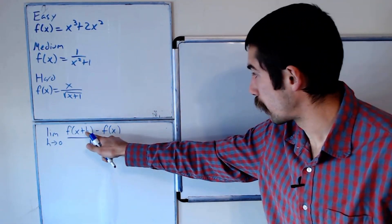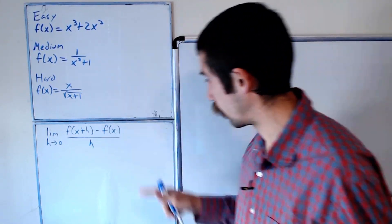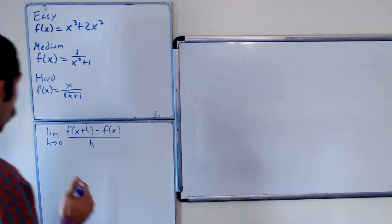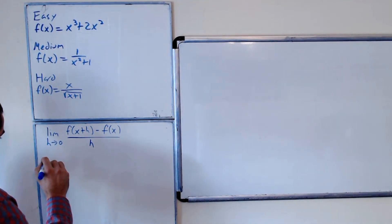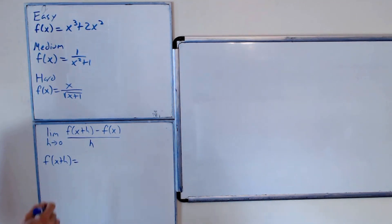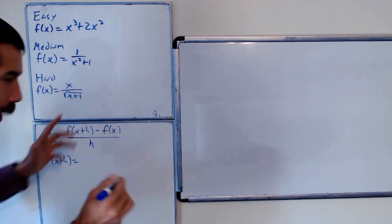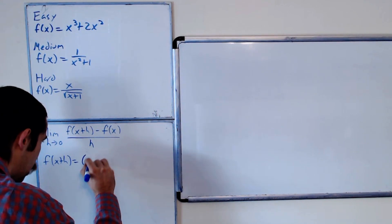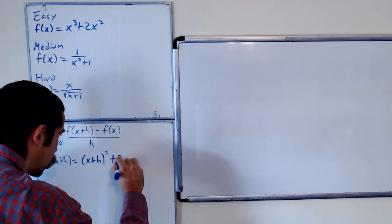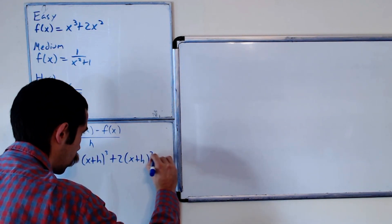Let's start by evaluating f(x+h) in our function, then we can subtract off the initial function and divide by h. So f(x+h) — remember we replace every x with x+h — so that's (x+h)³ plus 2(x+h)².